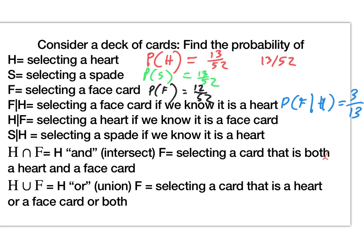What's the next answer? I'm going to write it down: probability of H given F. How many is this? Three out of 12. Probability of S given H — zero out of 13.